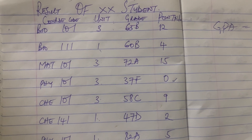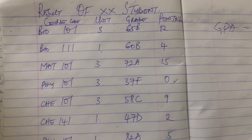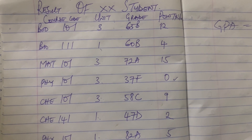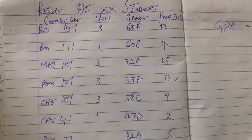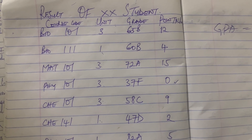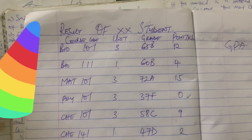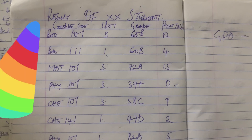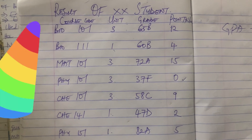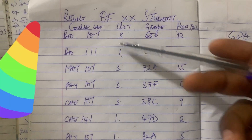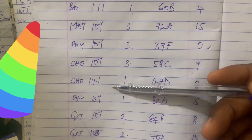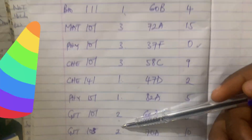In this video, I want to teach you how to add your carryover grade to your main result — that is to say, after having a carryover grade, how can you incorporate it into your main result? For instance, this is the result of Adachi, and we can see these are the grades. Look at the courses: BY 101, BY 111, up until GST 105.